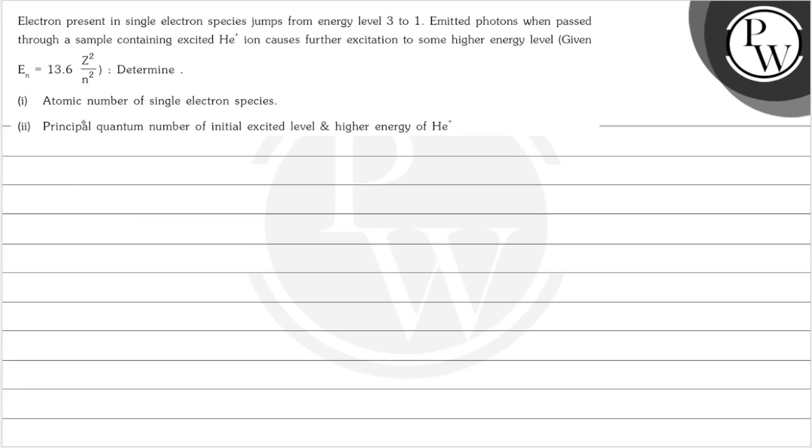Hello, let's start with the question. In this question, it is given that an electron present in a single electron species jumps from energy level 3 to 1. The emitted photons, when passed through a sample containing excited He+ ions, causes further excitation to some higher energy level.